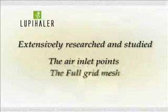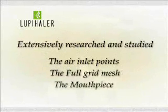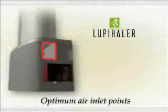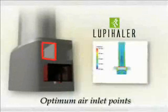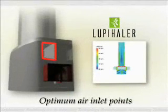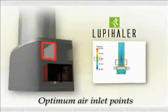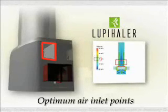Inlet points, the full grid mesh, and the mouthpiece. The effect of an optimum air inlet point is explained here with the help of this graph. Loopyhaler has full air inlet points that attain a chamber velocity of 40 meters per second, but the entry velocity is still at 20 meters per second.